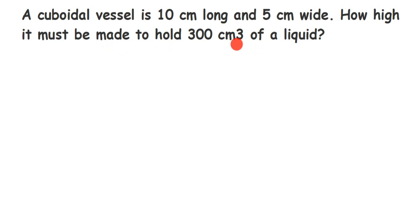They have given a vessel whose length is 10 centimeter. Let me mark this — length is 10 centimeter and width, which means breadth, is 5 centimeter. They have also given that it can hold 300 centimeter cube, meaning the volume is given as 300 centimeter cube. Centimeter cube is a unit for volume.